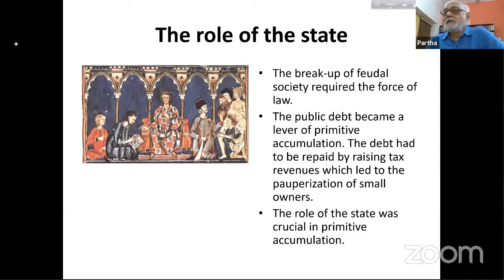There were laws enabling landlords to take over common lands, laws to control vagabondage, and another mechanism Marx points to: the public debt. The borrowings of the state, the borrowings of the monarch, kept going up throughout this entire period.